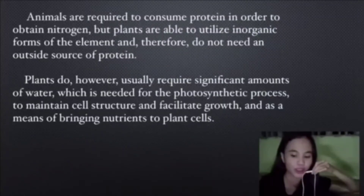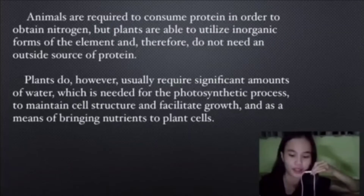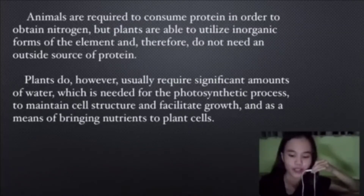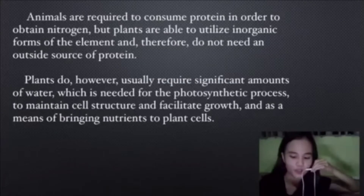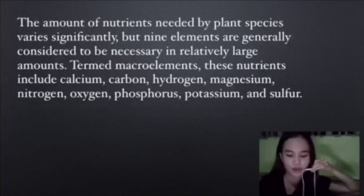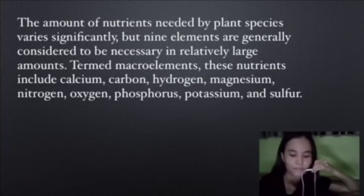Animals are required to consume protein in order to obtain nitrogen, but plants are able to utilize inorganic forms of elements and therefore do not need an outside source of protein. Plants do, however, usually require a significant amount of water, which is needed for the photosynthetic process, to maintain cell structure and facilitate growth, and as a means of bringing nutrients to plant cells. The amount of nutrients needed by plant species varies significantly, but nine elements are generally considered to be necessary in relatively large amounts.